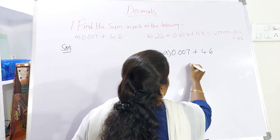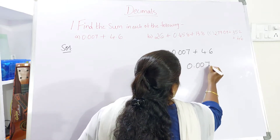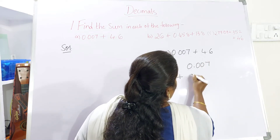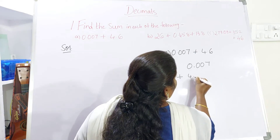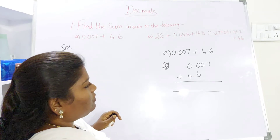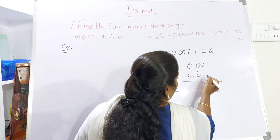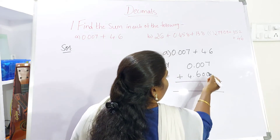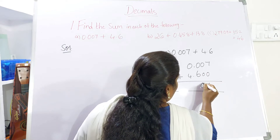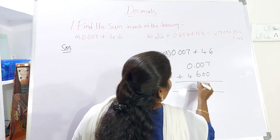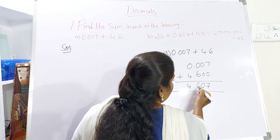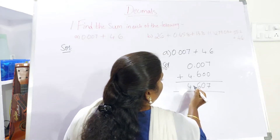The first one is 0.007 plus 4.6, and do remember the decimal point should lie in the same place so that you do not get confused. Now if there is no number here you can consider it as zeros. Just add: 7 plus 0 is 7, 0 plus 0 is 0, 0 plus 6 is 6, 0 plus 4 is 4, and the decimal point is after 3 digits. So count 1, 2, 3 and place the decimal point.